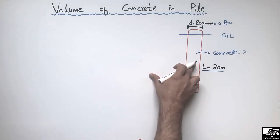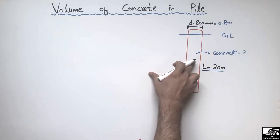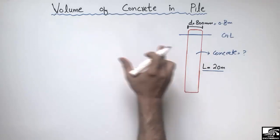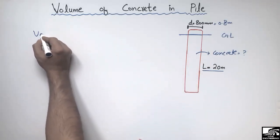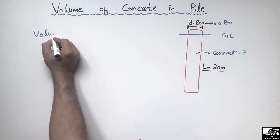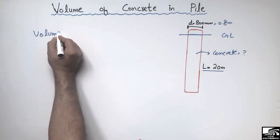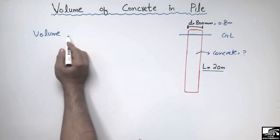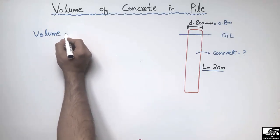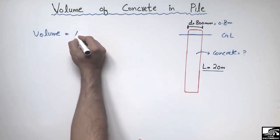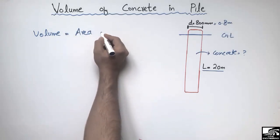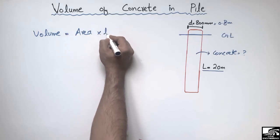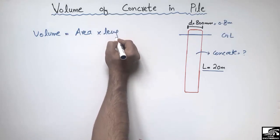The pile may be either rectangular or circular. The volume of concrete in a pile can be found by this formula: multiplying the cross-sectional area by the length of the pile.